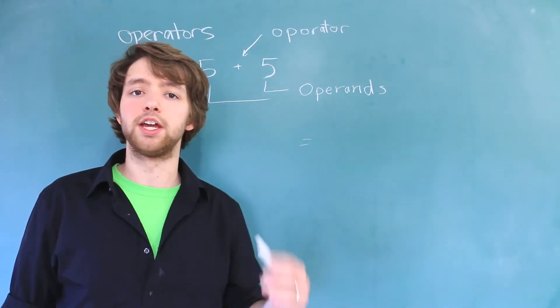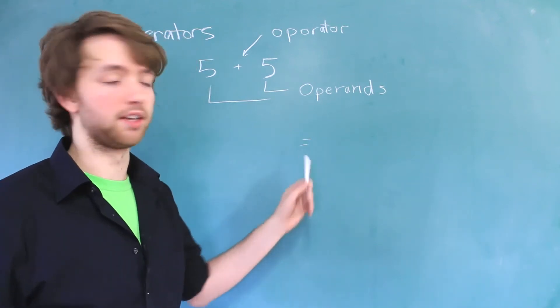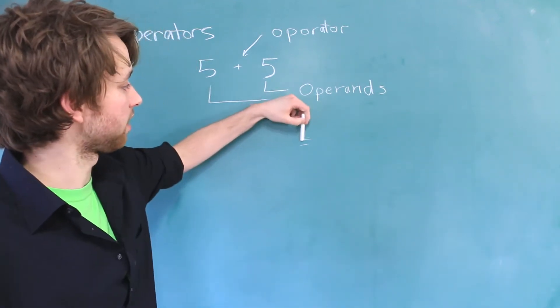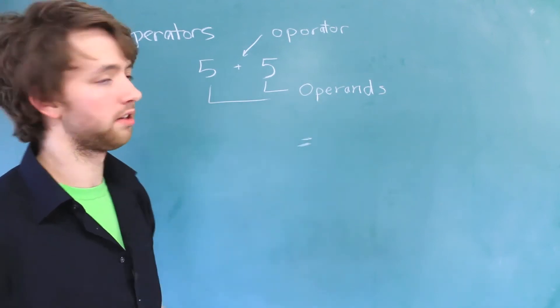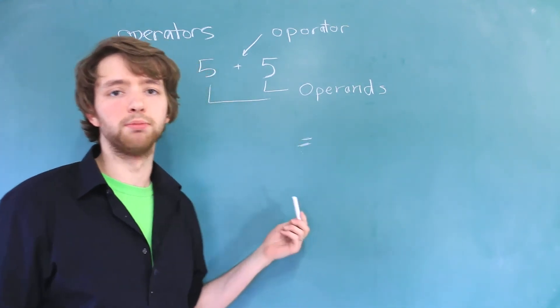It's also very important to understand that not all operators are used for math. Here is a perfect example, if you guys can even see that. This is the assignment operator, an equal sign. This isn't used for math. This is used to give a value to a variable.